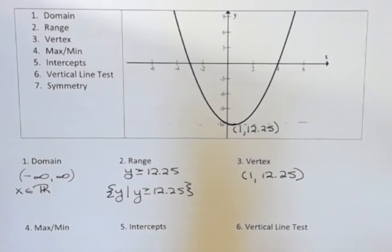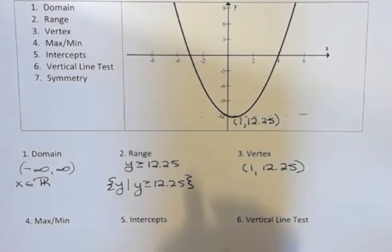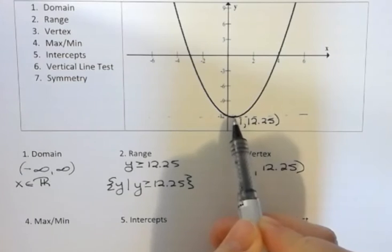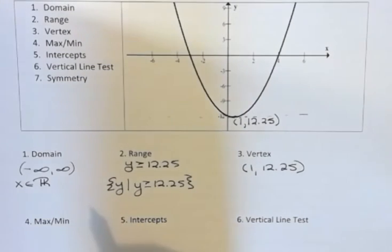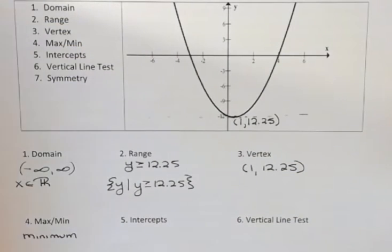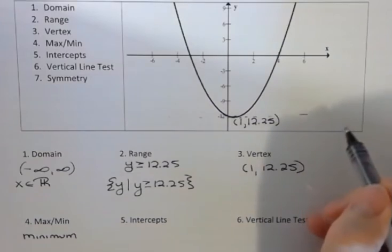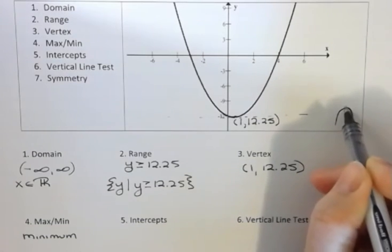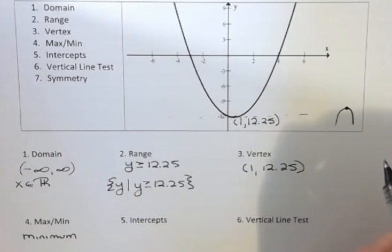Is the vertex a max or a minimum? This is the very lowest point and everything goes higher from that. So in this case, we have a minimum for our value. If you had a graph that was opening down, then that point would be the top. That would be the very highest. So that would be a maximum.